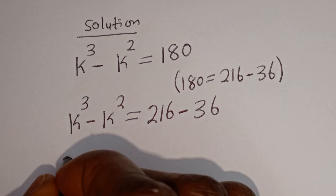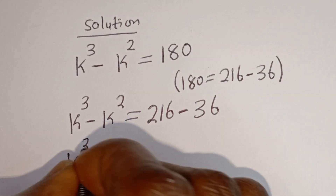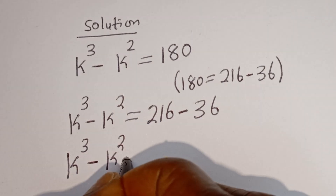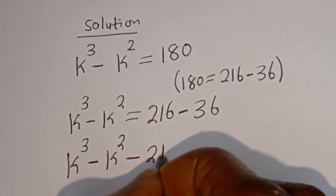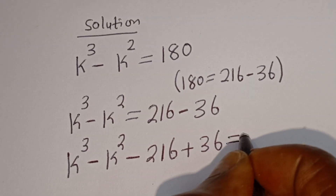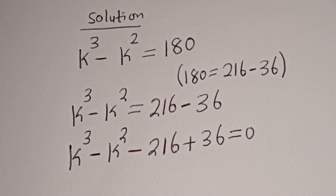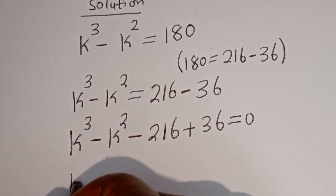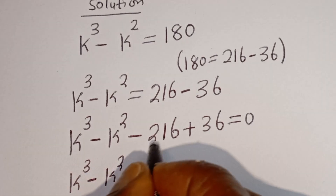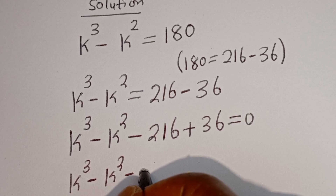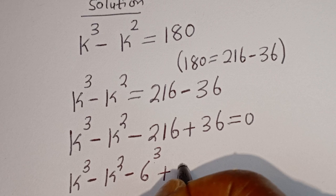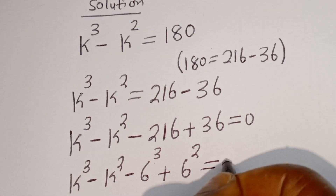Now here we have K to the power of 3 minus K squared. Then let's bring this to this side. We have minus 216 plus 36 is equal to 0. Now here we have K to the power of 3 minus K squared minus 216, which is 6 to the power of 3, plus 36, which is 6 squared, is equal to 0.